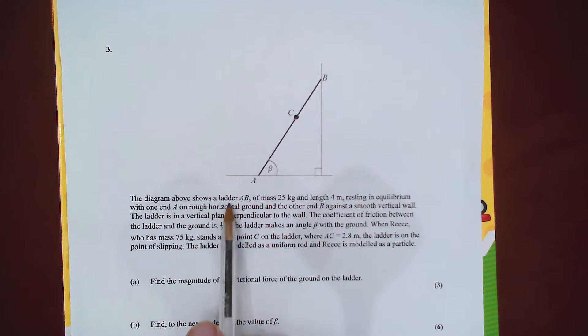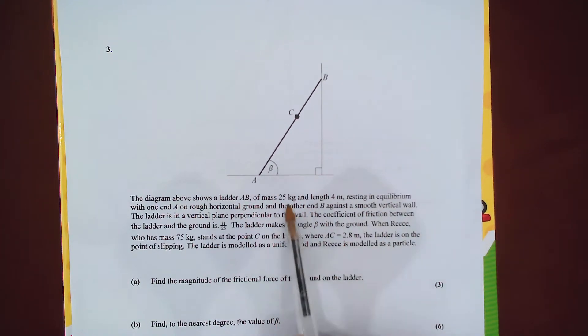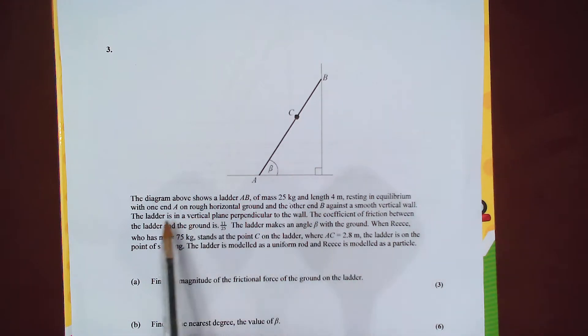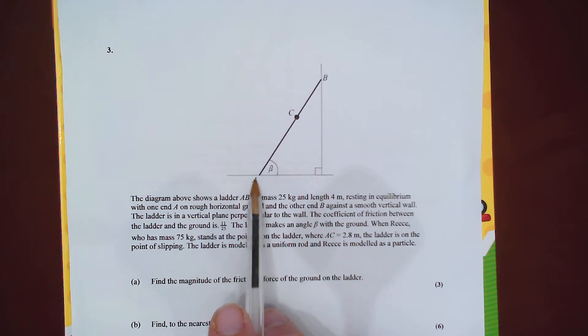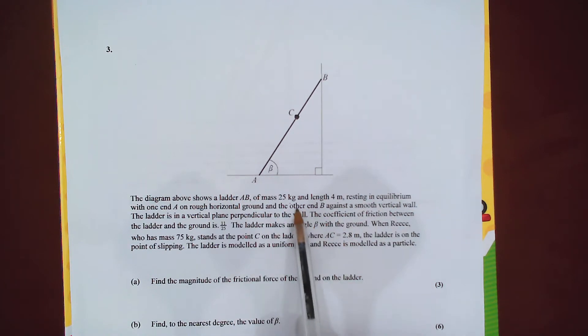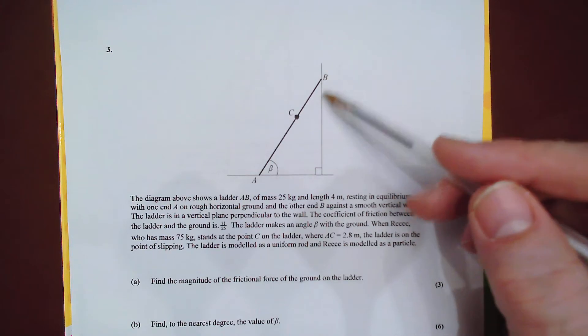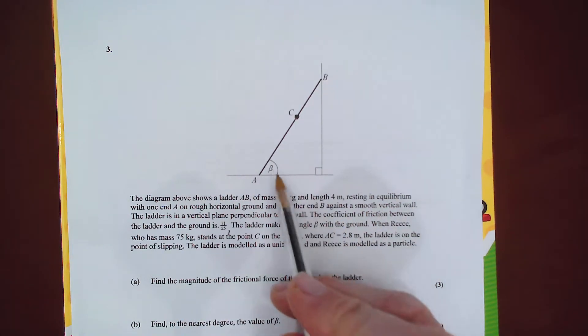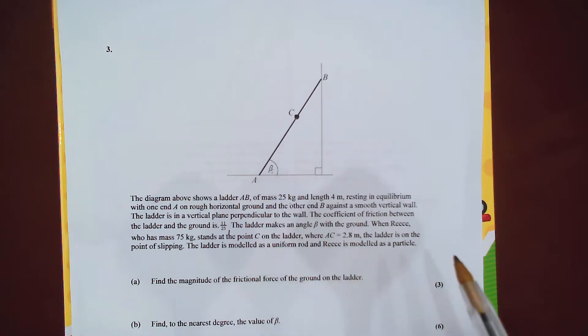Now let's have a quick look at the problem. The diagram shows a ladder AB. The ladder's mass is 25 kilograms and it's four meters long. It's in equilibrium with one end A on rough horizontal ground, so there'll be friction there, and the other end B against a smooth wall. The coefficient of friction is 11 over 25. As usual with these problems you've got a right angle, and the ladder makes an angle beta with the ground.